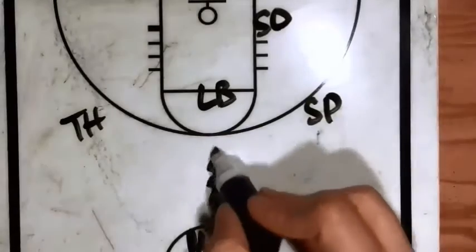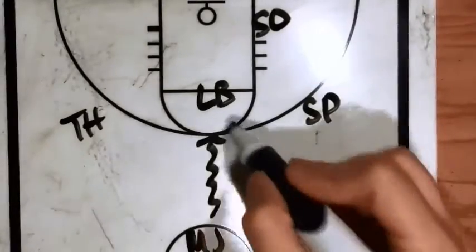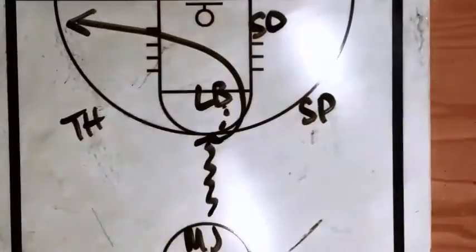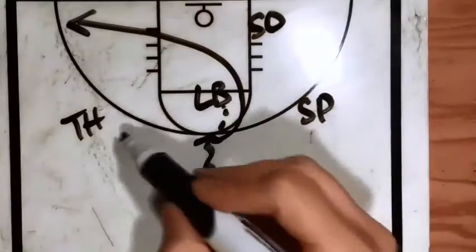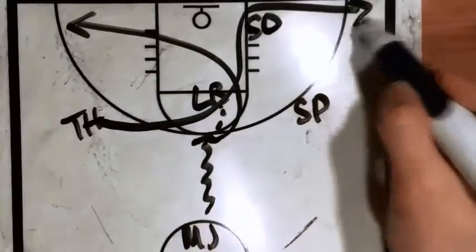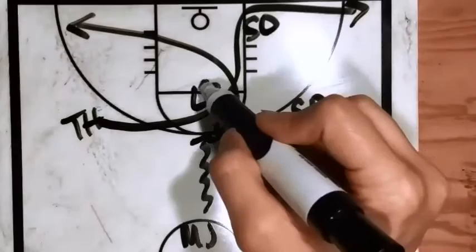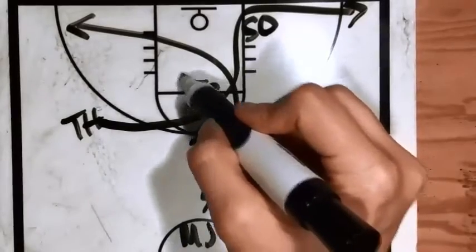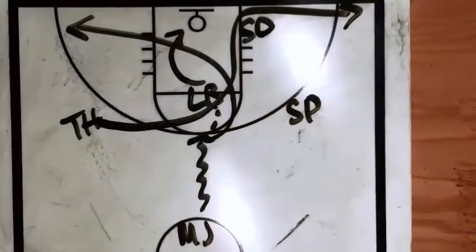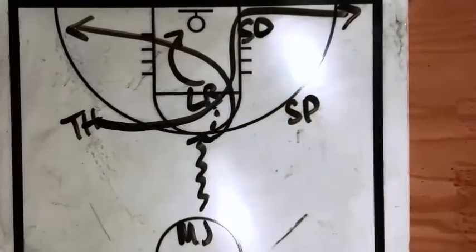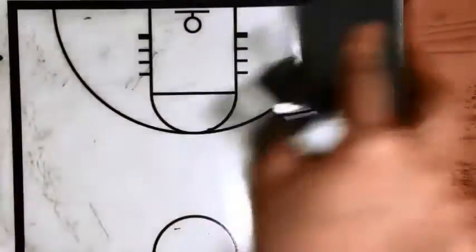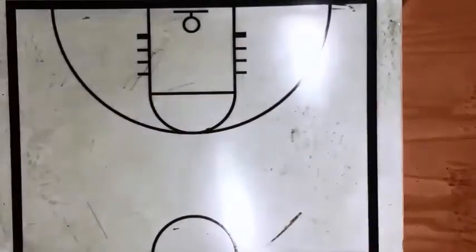So we've got MJ dribbling here to the top of the key, passing to LeBron and cutting off LeBron's shoulder. We've got Hardaway cutting out to the corner. LeBron didn't see any of these options — he's going to go straight to the basket. And that is how you draw or read a play in basketball.